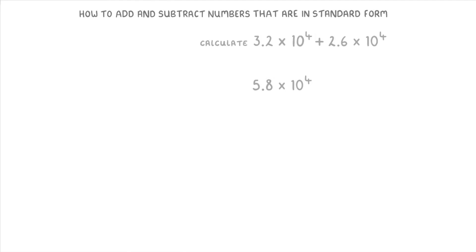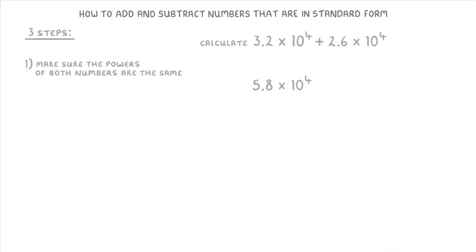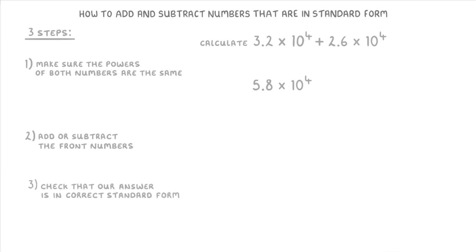There are three steps to these questions. First, we make sure the powers of both numbers are the same, which will sometimes involve changing the numbers around a bit. Then, once we've done that, we add or subtract the front numbers and keep the times 10 to the power bit the same. The last step is a double check that our answer is in standard form, because you normally have to leave your answer in standard form.